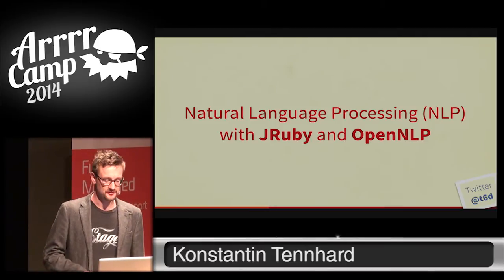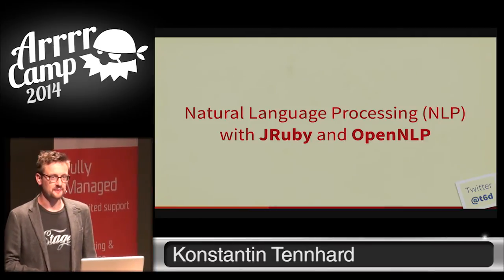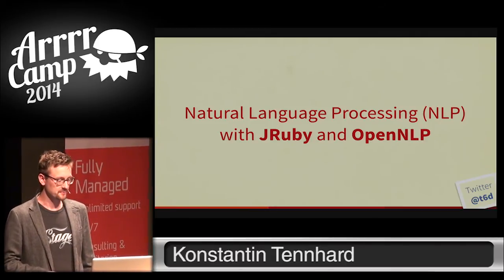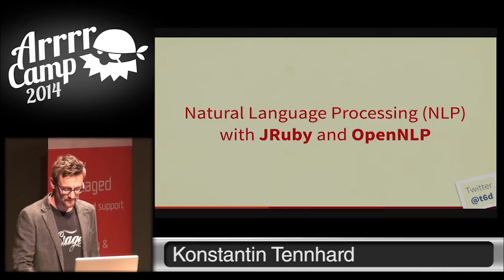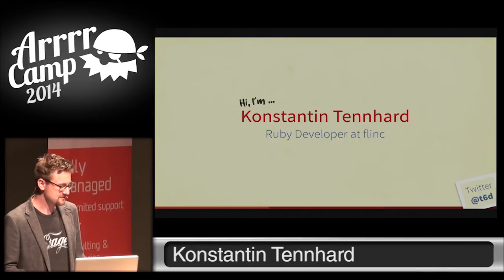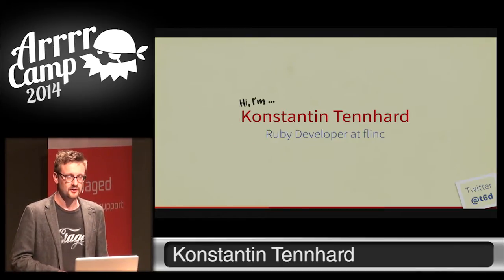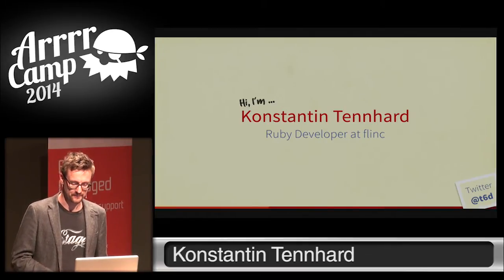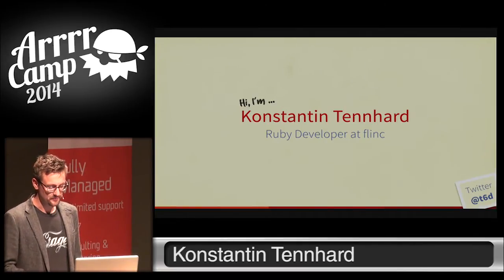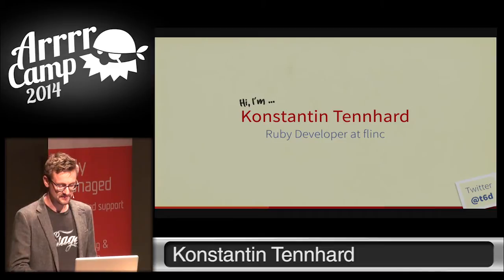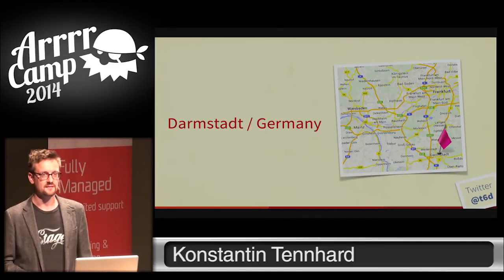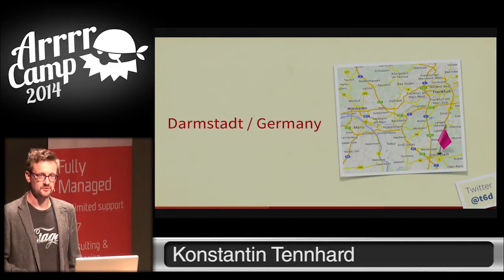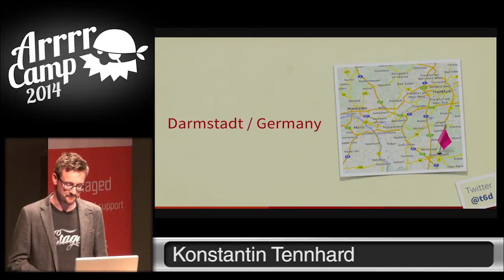As just mentioned, I'm here to talk about natural language processing, or in short NLP, with JRuby and OpenNLP. My name is Konstantin Tenhardt and I'm currently working as a Ruby developer for Flink. You can find me on Twitter, my handle is @T60, and I'm based not too far from Ghent, in Darmstadt, Germany, which is about a five-hour drive from here.